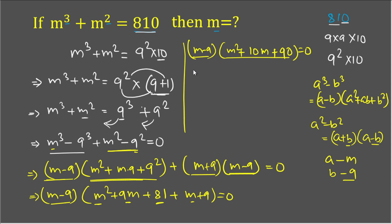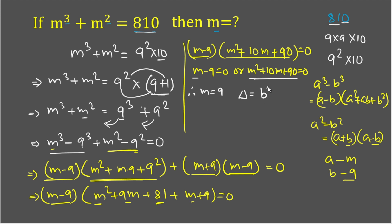Since the product of two factors equals zero, either m - 9 = 0 or m² + 10m + 90 = 0. From the first factor, m = 9. For the second, we calculate the discriminant: b² - 4ac = 10² - 4(1)(90) = 100 - 360 = -260.